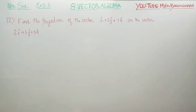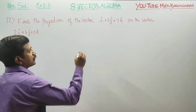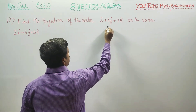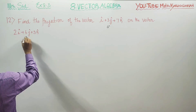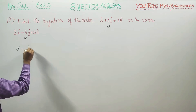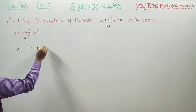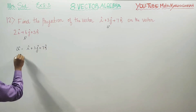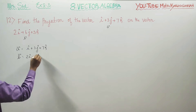Dear students, in exercise number 8.3, sum number 12, find the projection of the vector on this vector. Let us assume this is A vector and this is B vector. A vector is equal to i vector plus 3j vector plus 7k vector. B vector is equal to 2i plus 6j plus 3k.